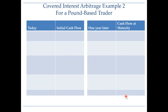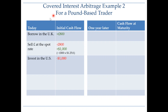Next, let's see whether it would be any different if you happen to be a British investor based in pounds. As mentioned before, the sequence of transactions is going to be exactly the same in order to make money, whether you are a British investor or an American investor. You still need to borrow in the UK, take those pounds to the spot market, sell them, receive dollars in return, and invest those dollars in the US.